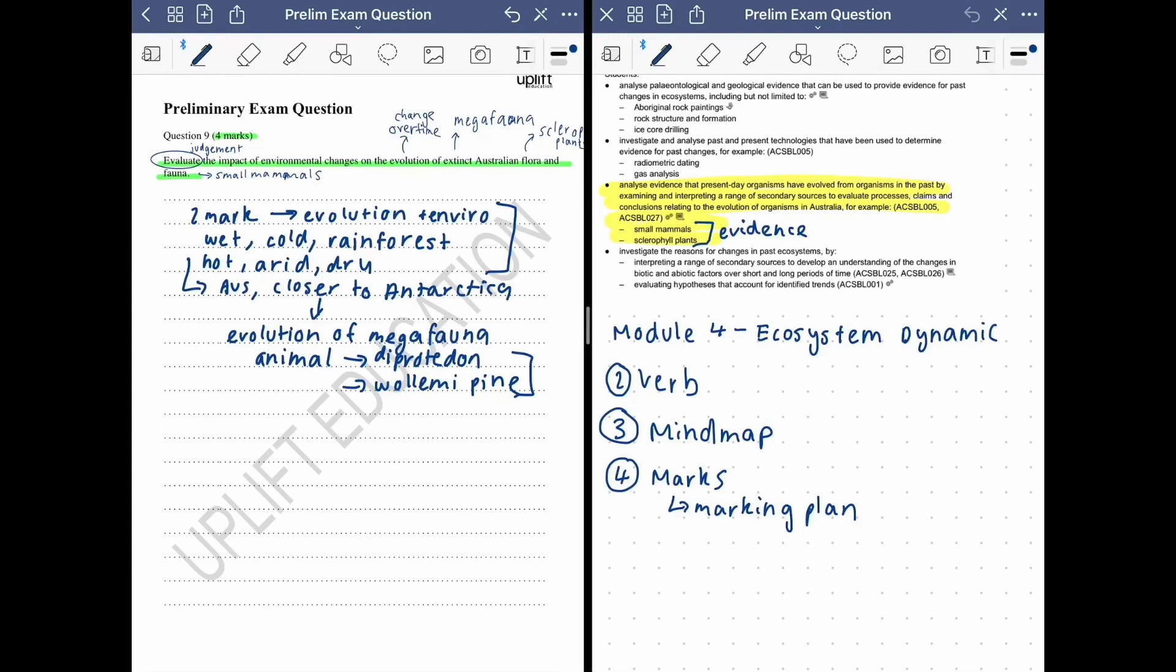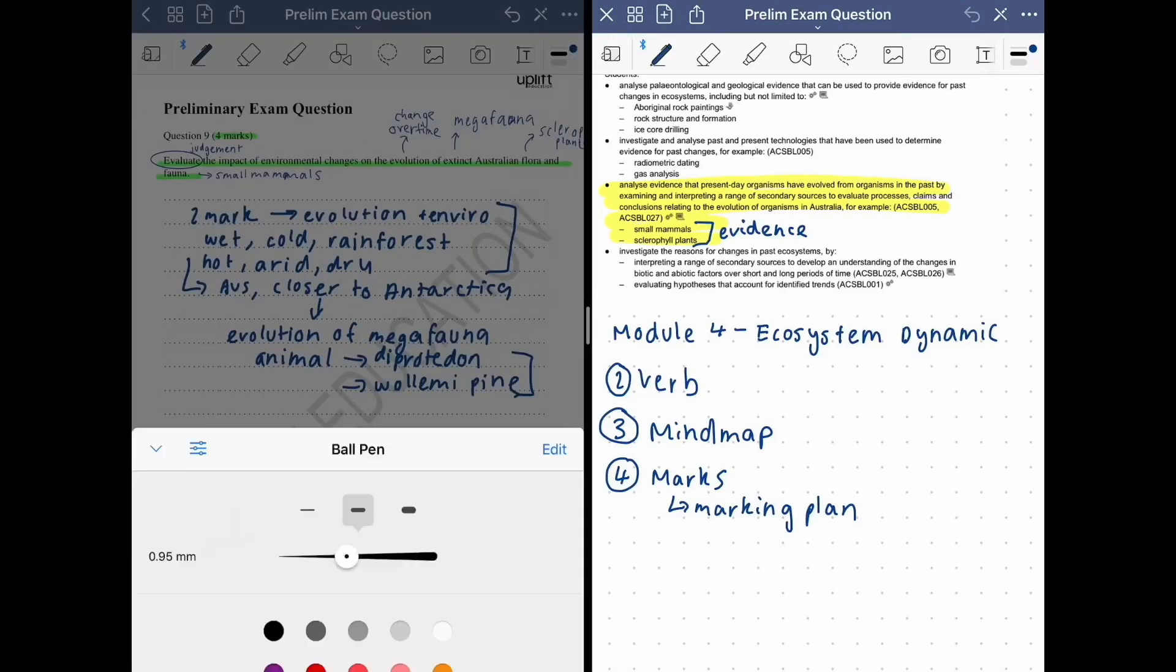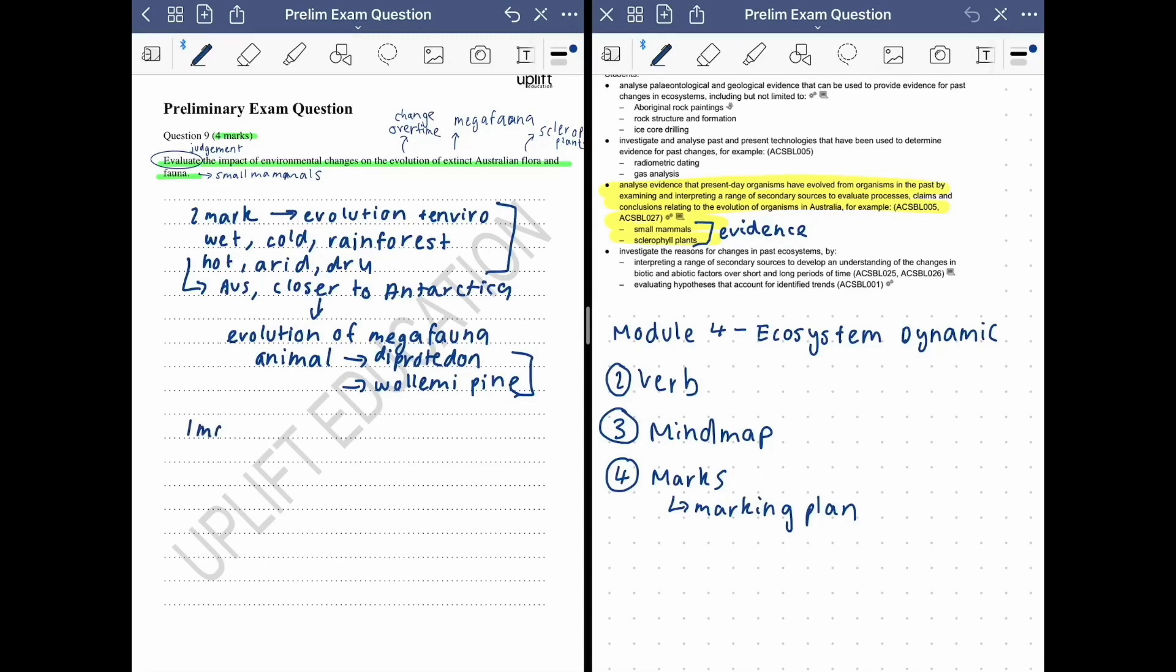The remaining two marks, I would break this up. So one mark I would put towards explaining the flora. So for example, the one we're specifically looking at is our sclerophyll plants. So these guys, I would just say why these guys are better suited to the hot, arid climate of Australia today. They've got harder leaves, deeper root systems, better water access, elaborating onto that and how these guys are more suited to the environment we have today.